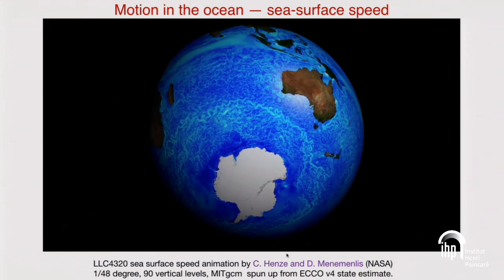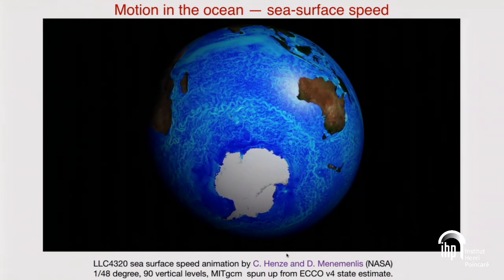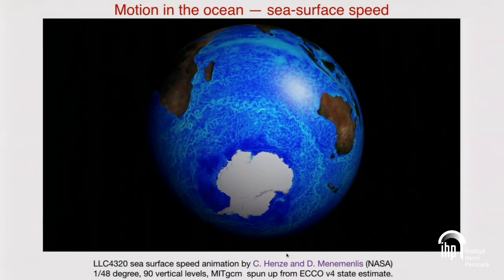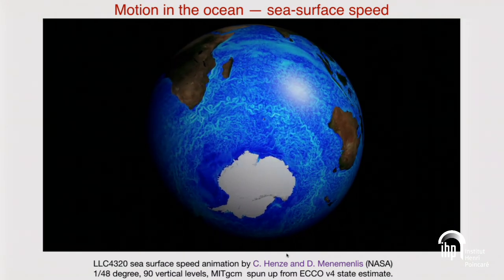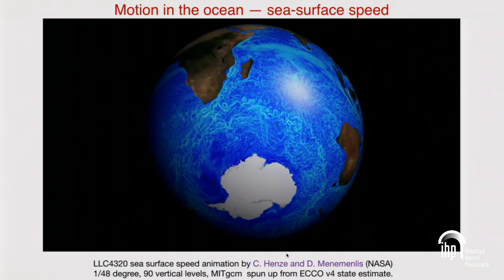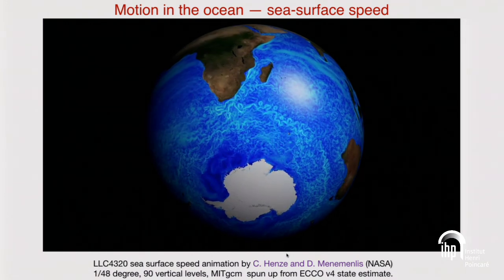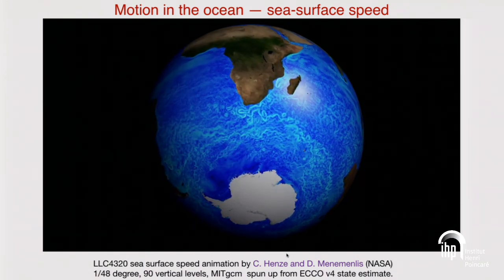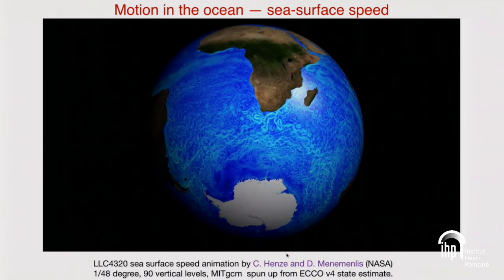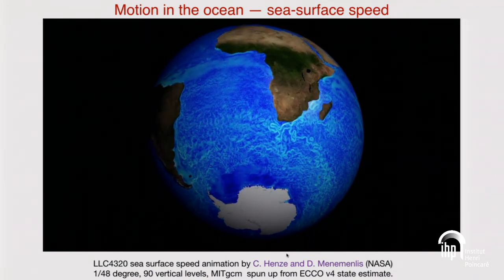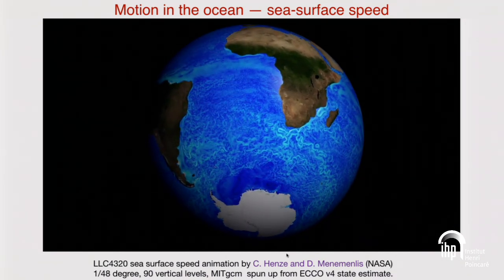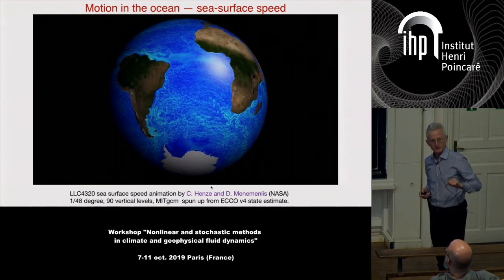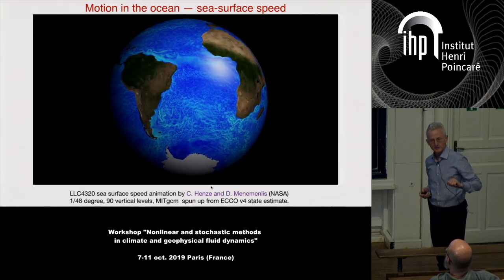One thing you can see, particularly in the Southern Ocean, are patterns which travel very quickly across the surface. That's an atmospheric storm traveling faster than anything in the ocean, putting the surface layers of the ocean into motion.